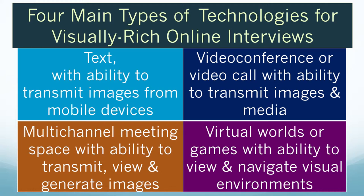Here I've laid out four main types of communication technologies that we can use. As you know from the book, I try to describe these by the kind of nature of the features versus by a brand name or a platform or a product. We start with the text-based communication that, even though it's primarily in writing, allows us to transmit images from mobile devices.